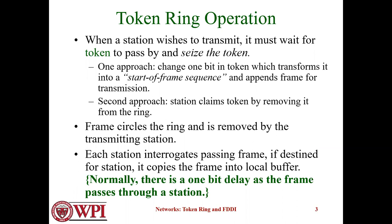The frame circles the ring and is removed by the transmitting station. Each station interrogates the passing frame; if it is destined for that station, it copies the frame into the local buffer. Normally there is a one-bit delay as the frame passes through a station.